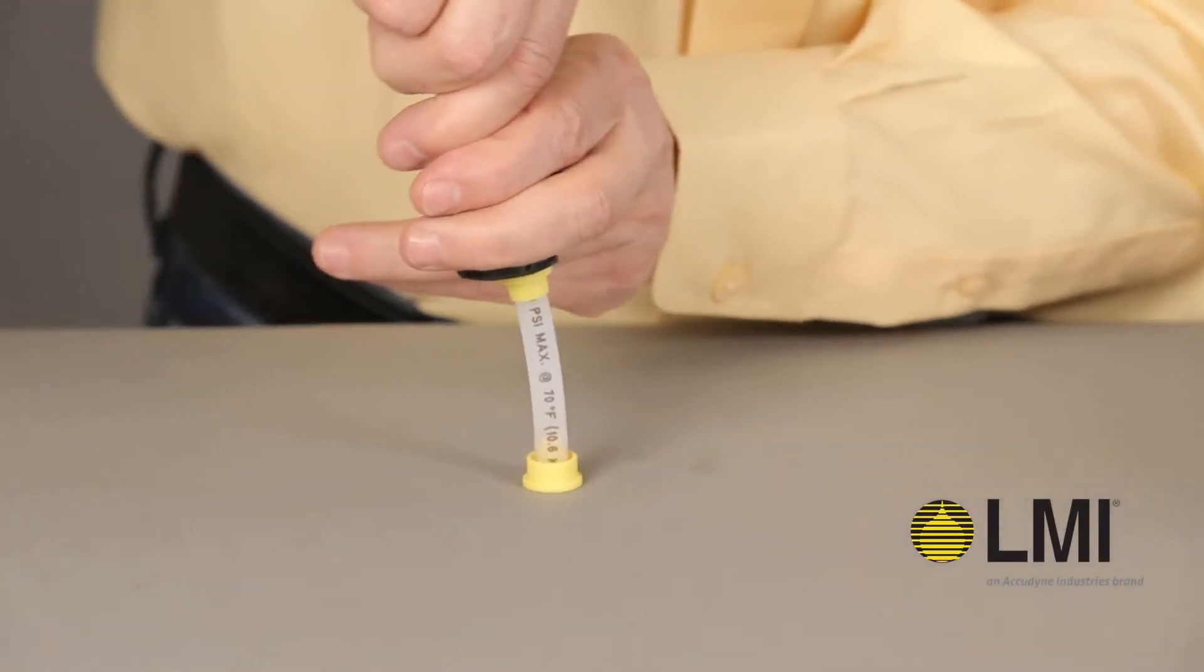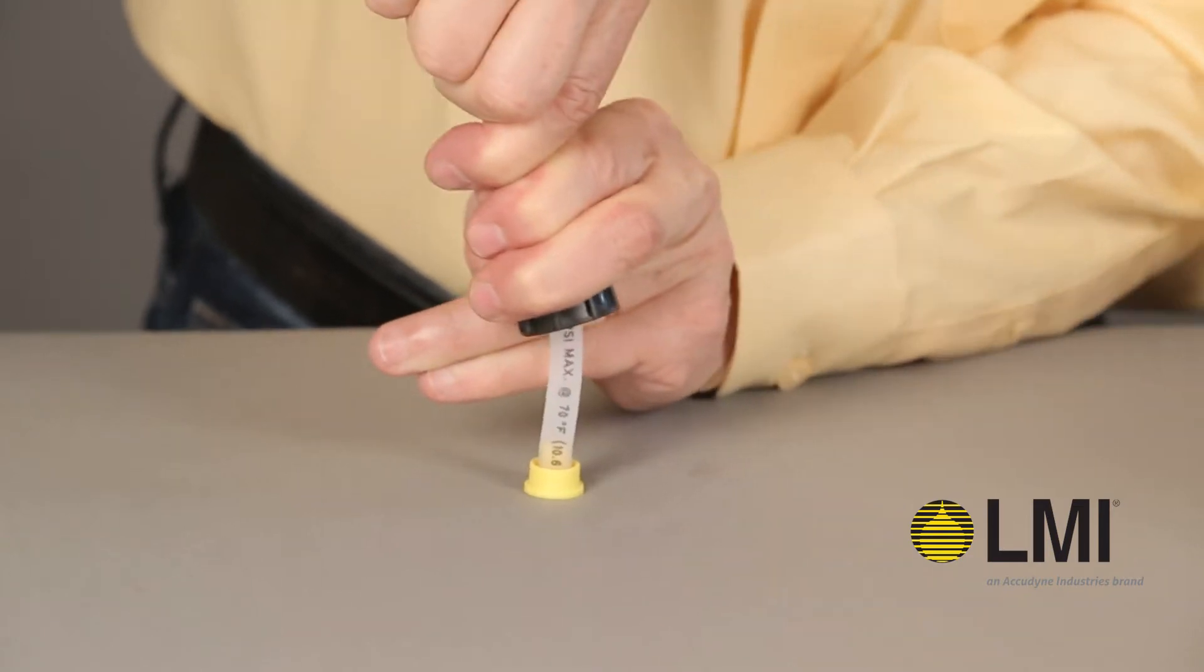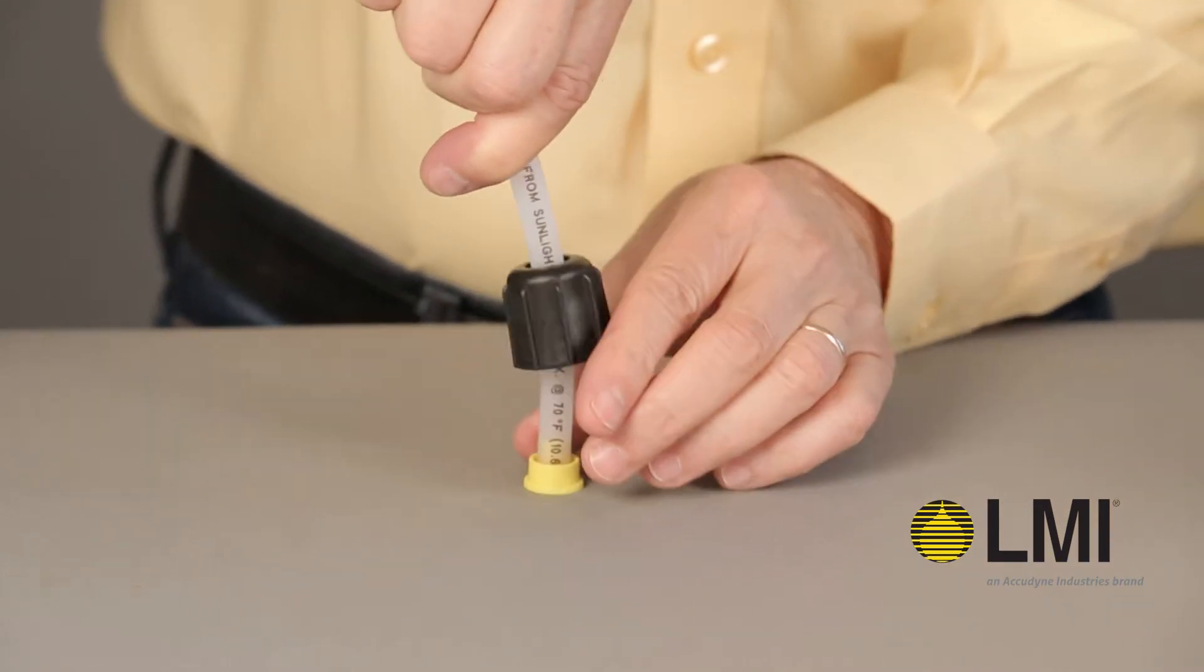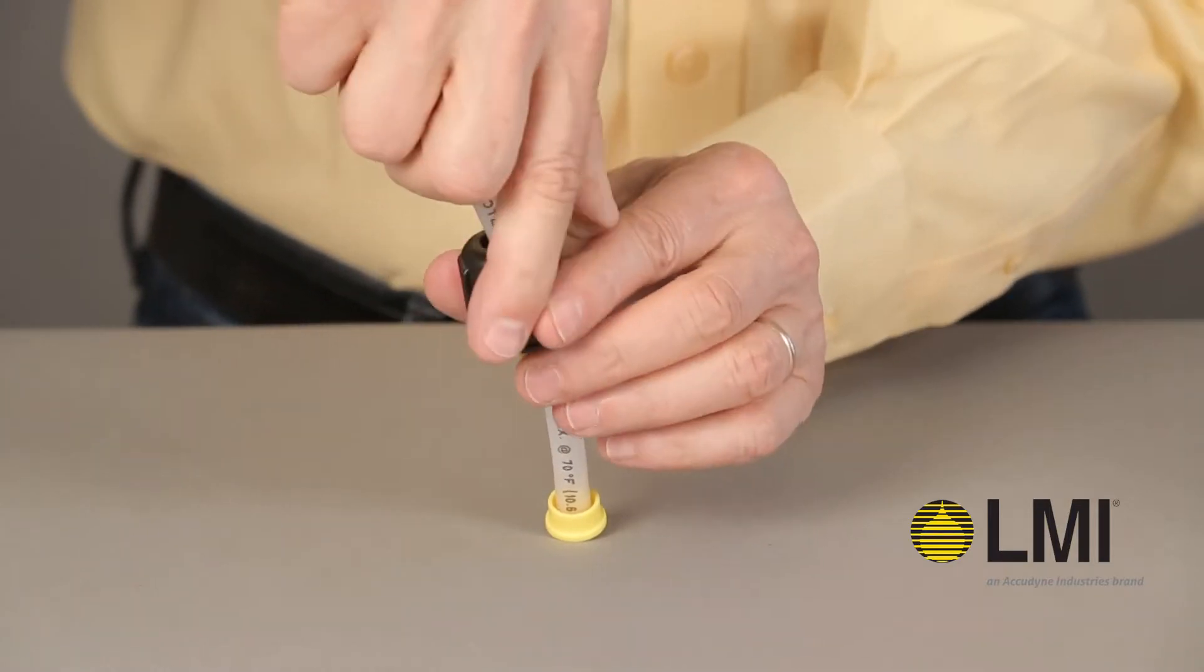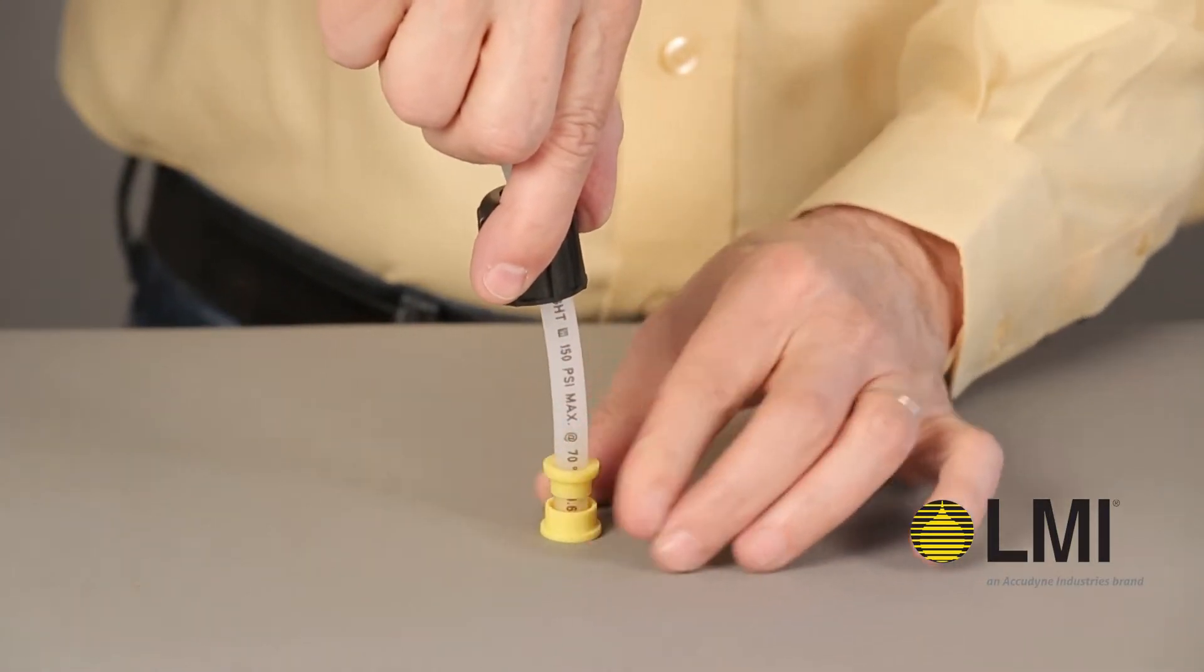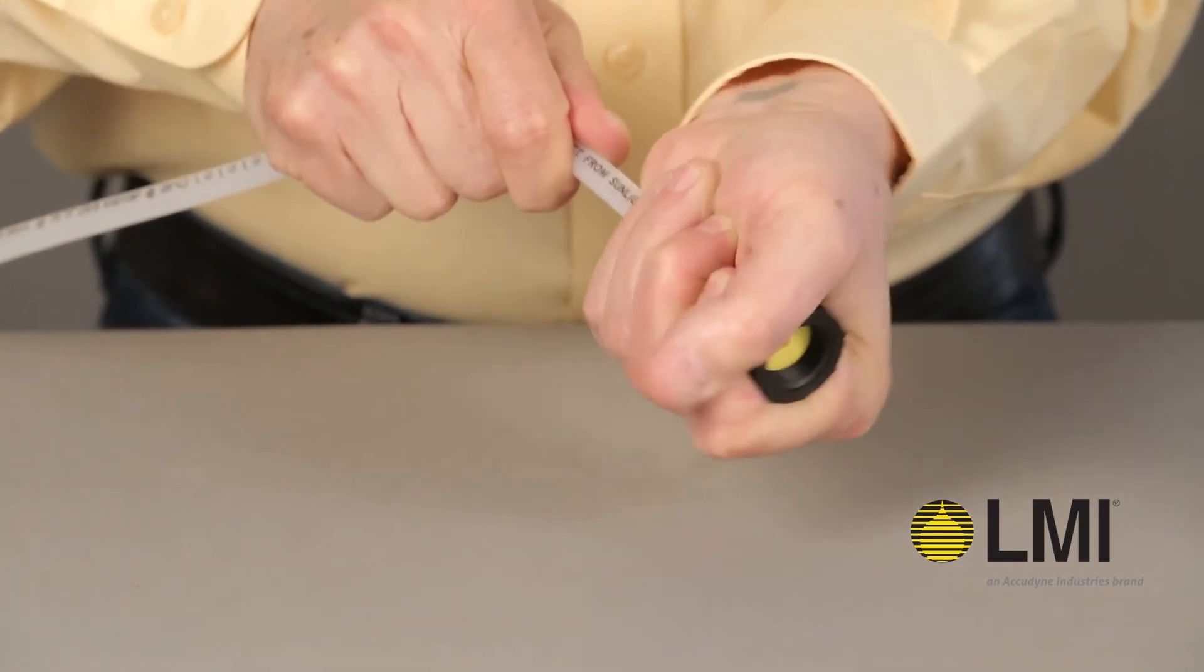Firmly press the bottom ferrule onto the tube by pushing firmly against a hard surface. Make sure the tubing bottoms out for a secure seal. Slide the female ferrule down to mate with the male ferrule. Use the coupling nut to firmly seat the two ferrules.